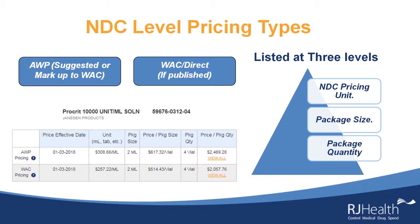Multiplying by two gives a price per vial of $617.32. We also have a package quantity, where each individual vial comes in a packaging of four, so there's a multiplier of four. This NDC-level pricing yields three unique prices: one at the ml, one at the package size, and one at the package quantity of four vials — shown as a pyramid, small, medium, large.